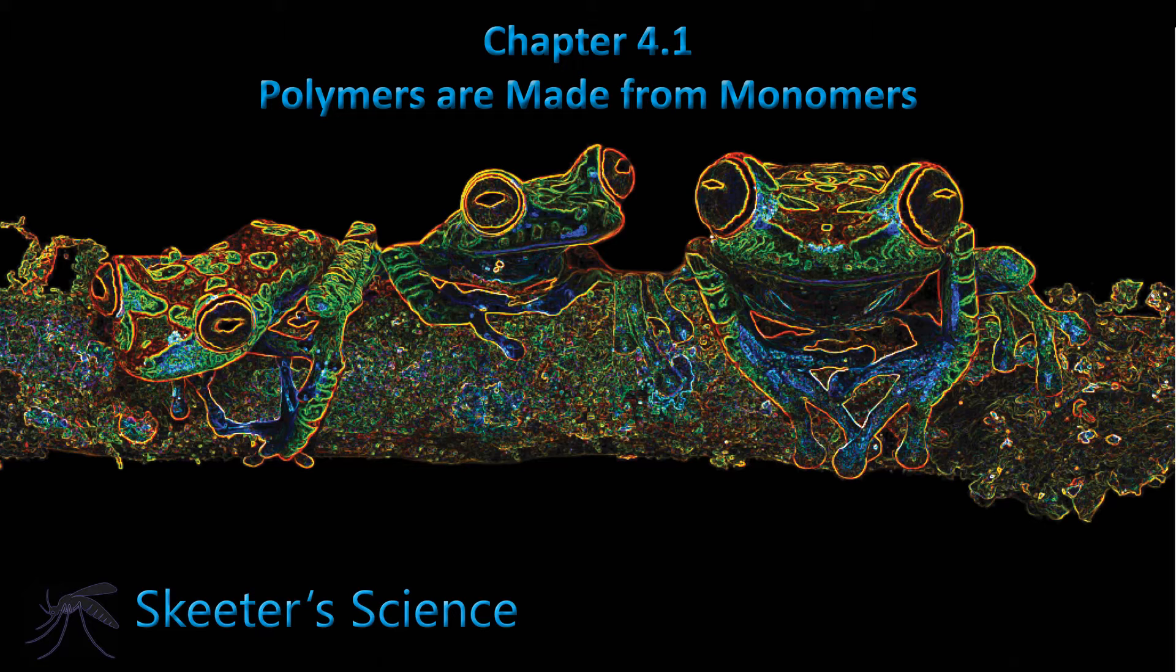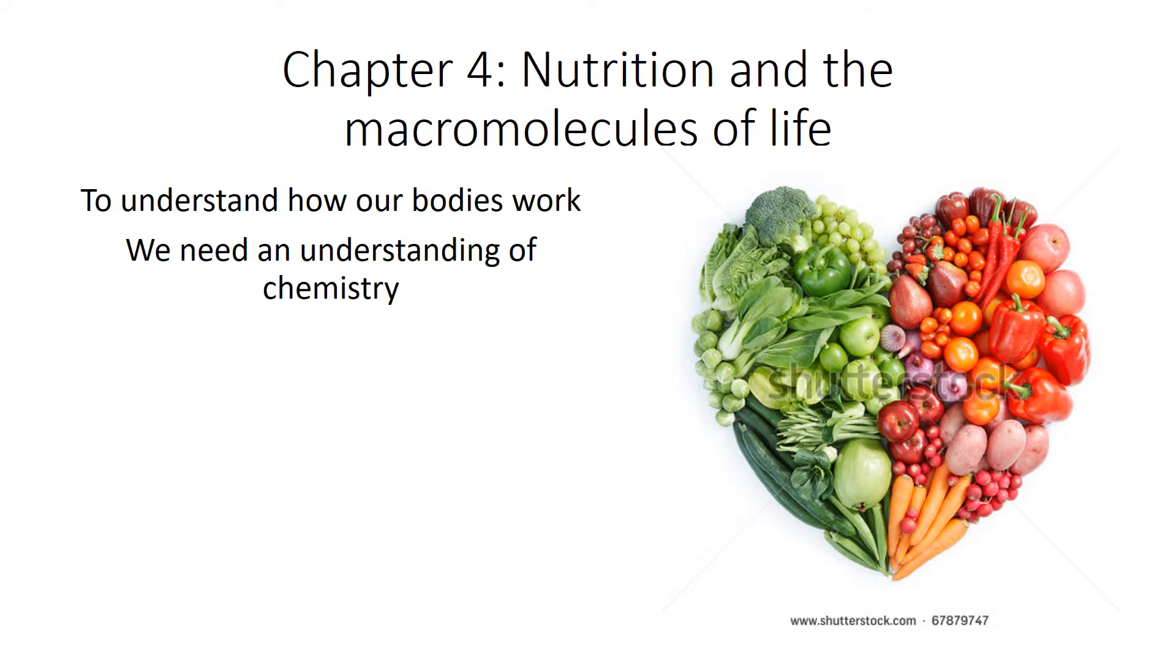Now chapter 4 section 1 is about polymers and how they're made from monomers. One way that we can start to appreciate chemistry is realizing that nutrition and chemistry are basically the same thing. So to understand how our bodies work, we need an understanding of chemistry.